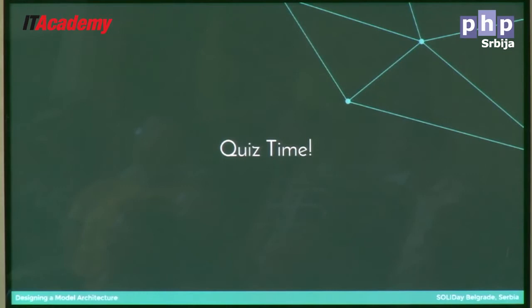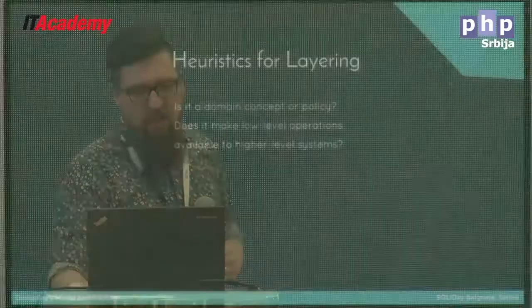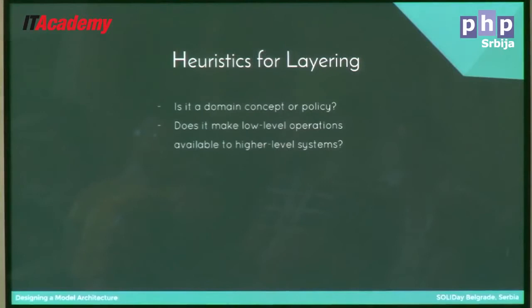So a little quiz. I have a few heuristics for layering. Is it a domain concept or policy? If it's something that business people talk about — not something the technical people and business people can both discuss in the same terms — if it's a business-only concept, then it's clearly a model issue. Does it make low-level operations available to higher-level systems, like sending an email? That's more of an application service layer construct. And if it's user interface, it falls in the presentation layer — all user interface in the presentation layer, all the time.